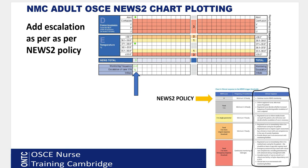The escalation box: if the total score is zero, you do not need to escalate, so write N. If the total score is more than zero, you must always escalate — write Y. Any score above zero means you put Y, as per NEWS policy. Learn your NEWS policy to know exactly when and to whom to escalate.